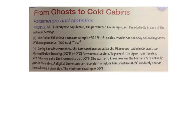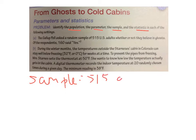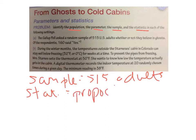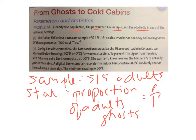Let's walk through these examples and identify the population, parameter, sample, and statistic. For the first one, the Gallup poll asked a random sample of 515 adults whether or not they believe in ghosts — of the respondents, 160 said yes. Our sample is the 515 adults. Our statistic is the proportion of adults that believe in ghosts, which is p-hat, equal to 160 over 515. That is our statistic — the sample proportion of people that believe in ghosts.